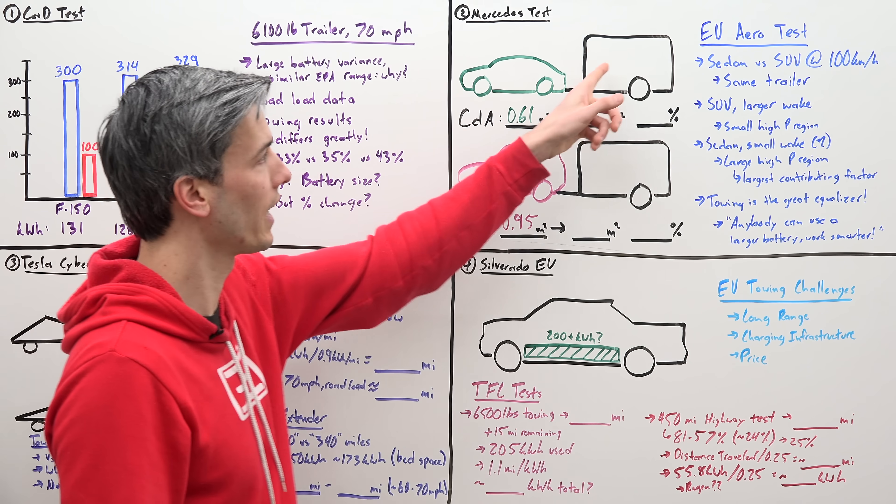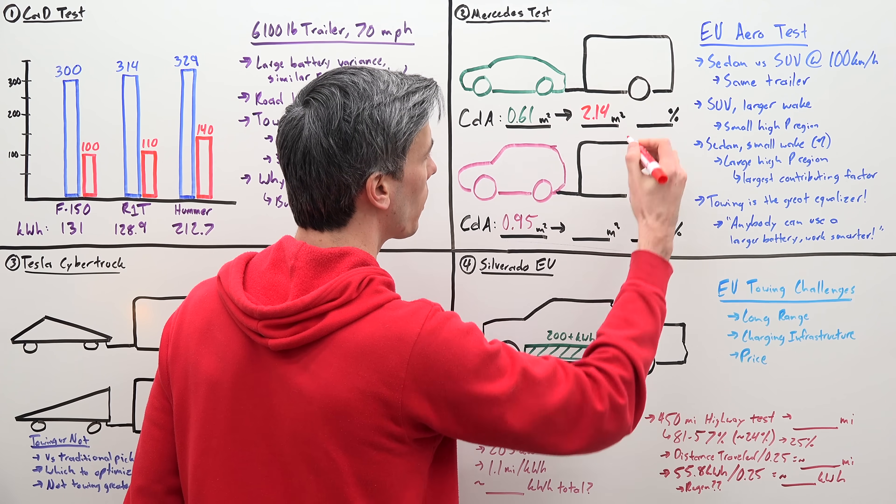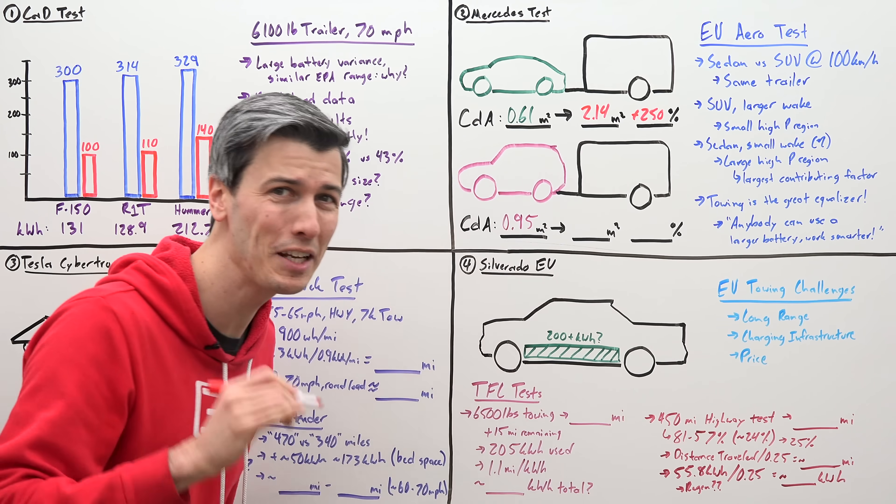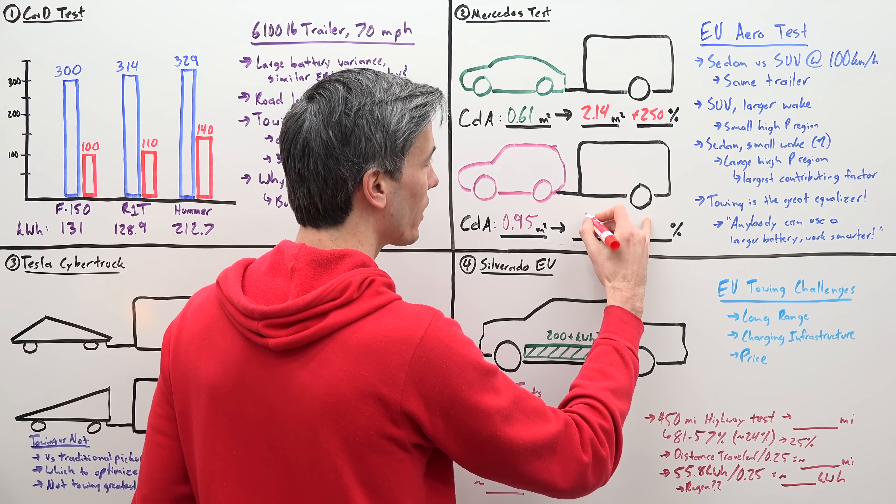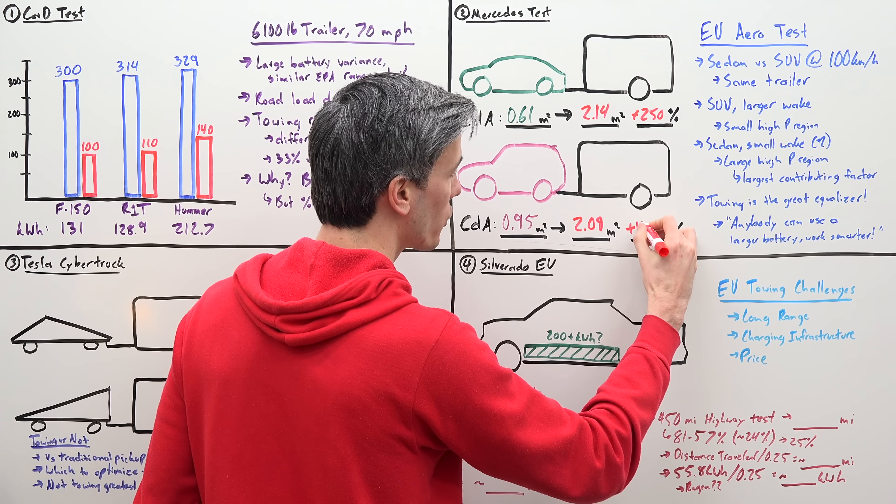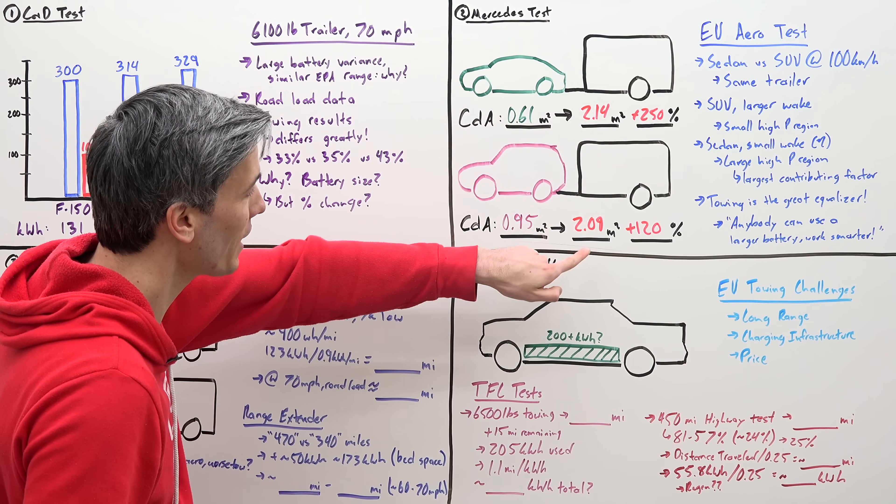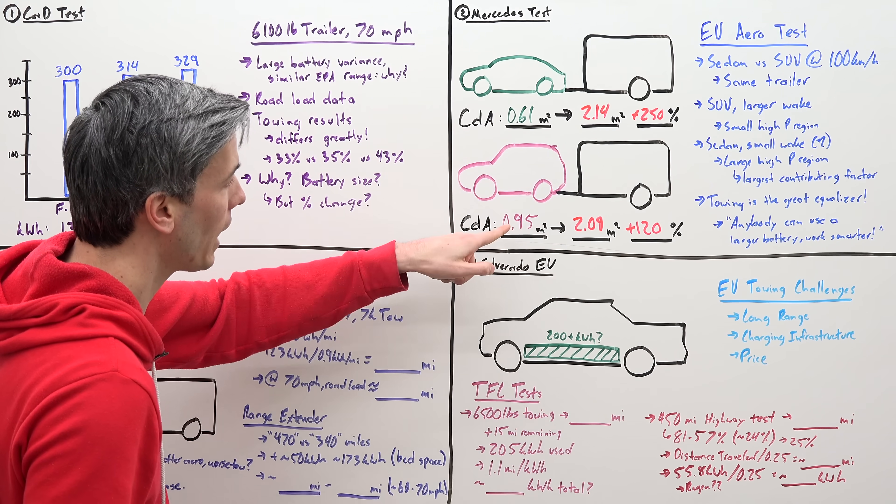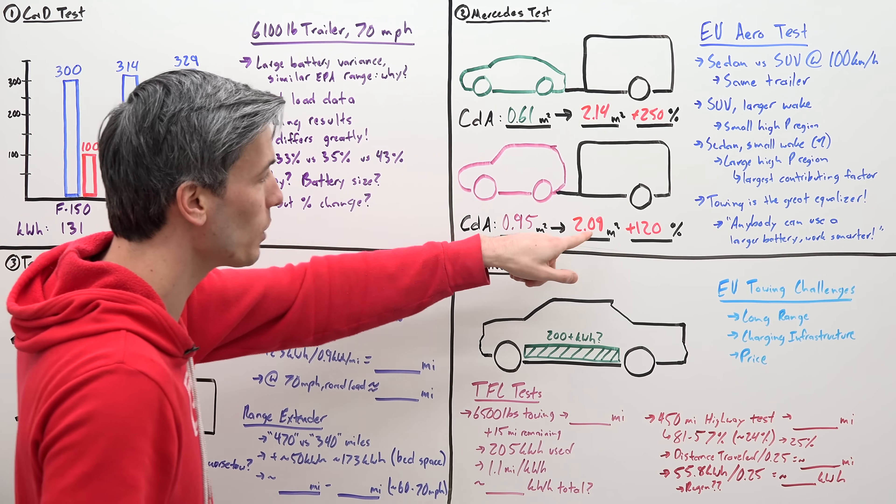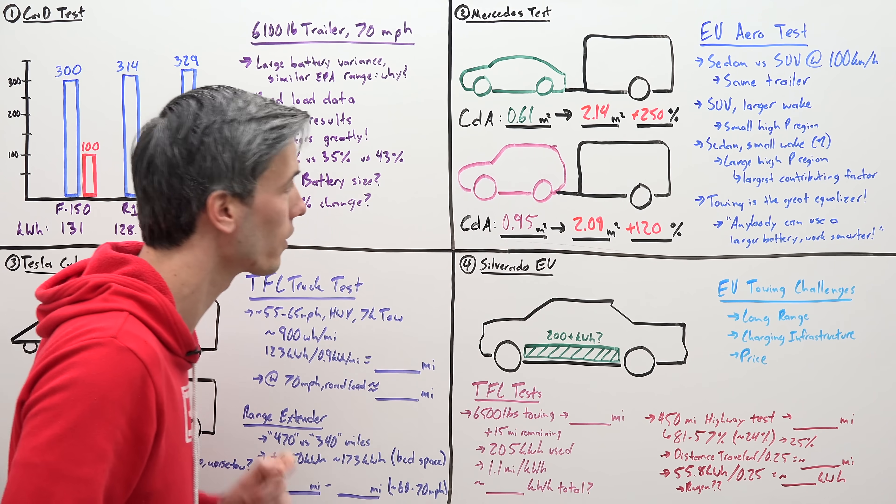So what happens when you then attach the same trailer to both of those vehicles? So for the sedan trailer combo, the CDA increased to 2.14 meters squared, or an additional 250%. Now for the SUV, it increased 2.09 meters squared, just an additional 120%. So as you can see with the trailer, the SUV, despite having much worse aerodynamics than the sedan, is actually more aerodynamic while traveling down the road than the sedan combined with the trailer.